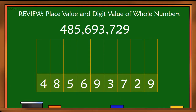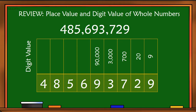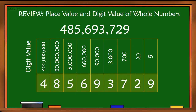Now let's go to digit values. For the number 9, we have 9. 2 is 20, 7 is 700, 3 is 3,000, 9 is 90,000, 6 is 600,000, 5 is 5 million, 8 is 80 million, and 4 is 400 million.